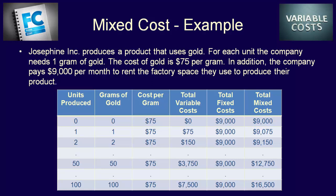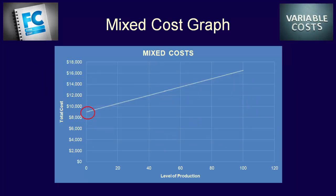How would we graph this? On this graph, the y-axis is the total cost and the x-axis is the level of activity — the number of units the company produces. At zero units, the total mixed cost equals $9,000, which is exactly what the graph shows. The total mixed cost line is almost identical to the variable cost line, except that the intercept with the y-axis is at the amount of the fixed cost: $9,000.